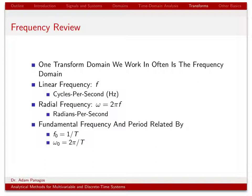Some things to keep in mind when dealing with periodic signals: periodic signals have a period, denoted capital T, meaning the signal repeats exactly every T units of time. If its period is T, its fundamental frequency F-naught equals 1 over T. For example, a signal with period half a second has a fundamental frequency of 2 hertz. We can convert to radial frequency: omega-naught equals 2 pi F-naught, or equivalently 2 pi over T.